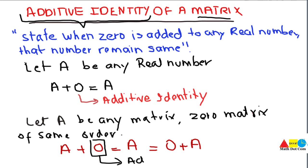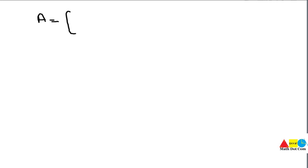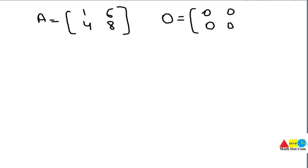It is called the additive identity of a matrix because it does not affect the original matrix in any way. Let's say we have a matrix A of order 2×2, having two rows and two columns. A zero matrix is a matrix having all elements equal to zero.